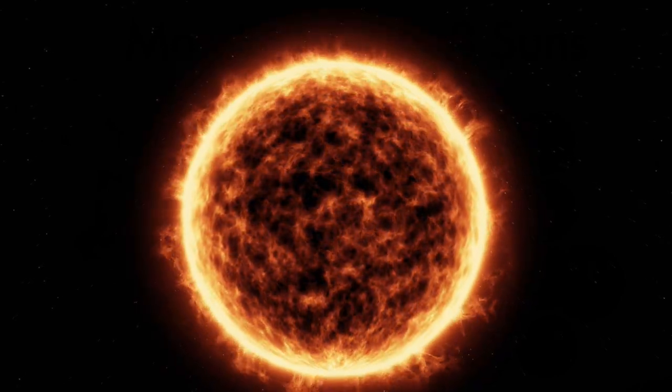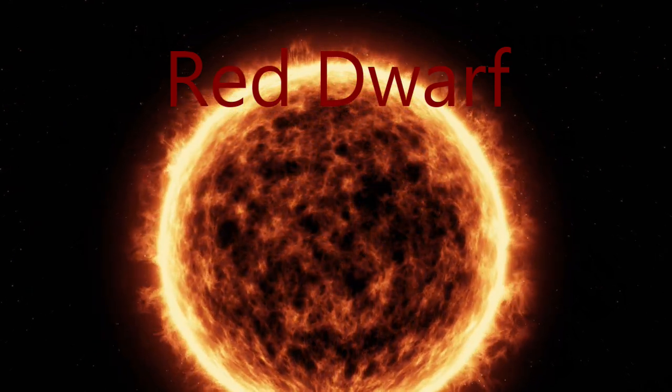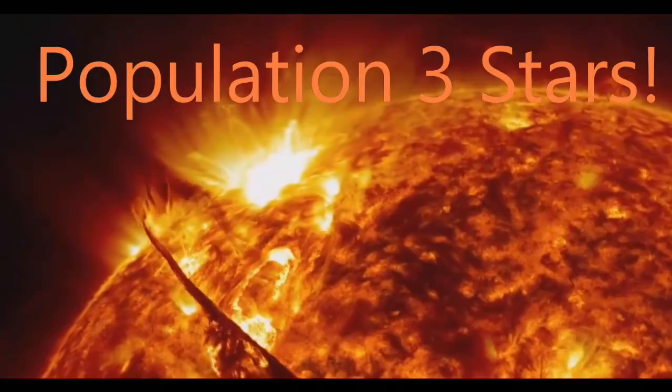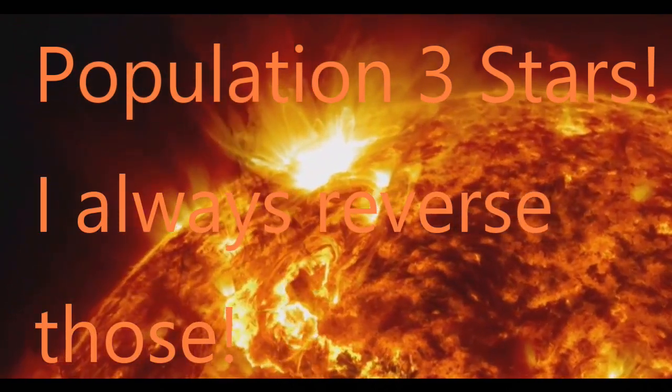This can take a trillion years if a star is small like a red dwarf, or it can take only a few thousand years if the star is super massive like the population one stars at the beginning of the universe. The nuclear fire dims and starts to collapse in on itself. This causes the heat and pressure at the core to climb rapidly.